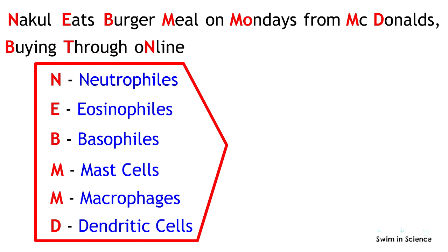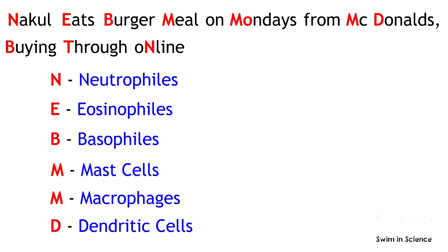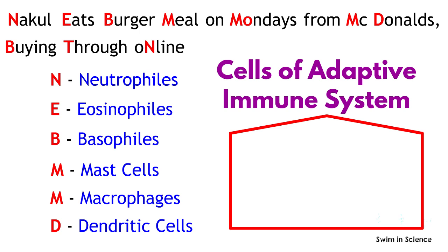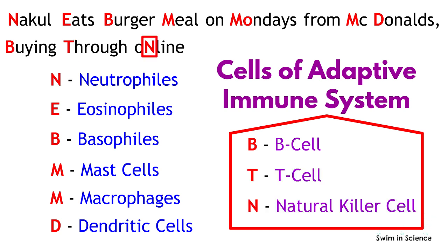These cells are considered the cells of the innate immune system. In contrast, the cells of the adaptive immune system consist of B, which stands for B cell; T, which stands for T cell; and N, which stands for natural killer cell.